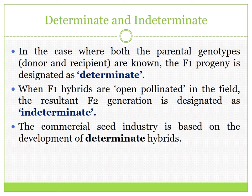Consistency can be achieved by developing determinate hybrids which ripen at the same time. In the case where both parental genotypes — the donor and recipient — are known, the F1 progeny is designated as determinate. When F1 hybrids are open pollinated in the field, the resultant F2 generation is designated as indeterminate. Indeterminate hybrids may exhibit variation in phenotypical traits which may not be desired by commercial breeders. This is why the commercial seed industry is based on the development of determinate hybrids.